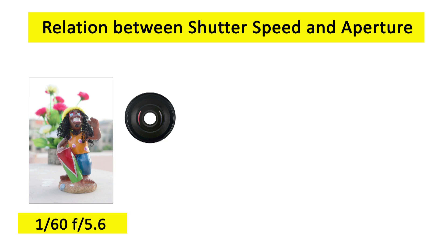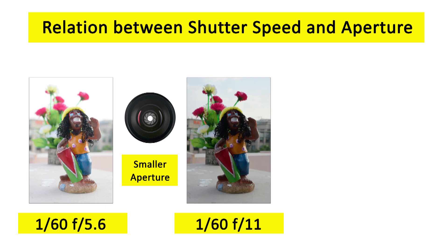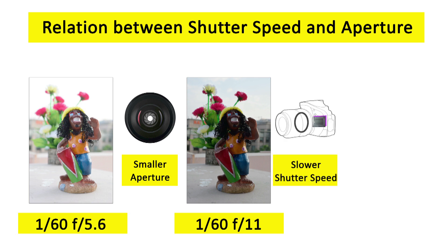Now, if your intention is to bring more background into focus, you have to increase the f-number, making the aperture further smaller. Once you do that, the image will be underexposed, because you are cutting the amount of light entering the image sensor. To compensate, you need to change the shutter speed — slow it down to increase the duration of light entering the sensor.